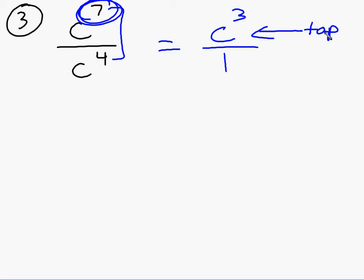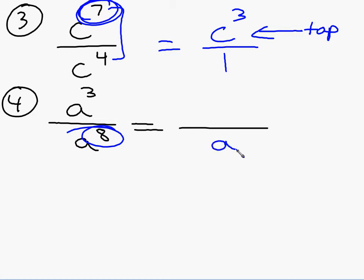This next example will help clear that up. If I had a to the 3rd over a to the 8th, the difference between 8 and 3 is 5, isn't it? So there is an a to the 5th left. But look where the bigger power is. It's in the bottom. So my a to the 5th is in the bottom. On top, I just have a 1. So my answer is 1 over a to the 5th.